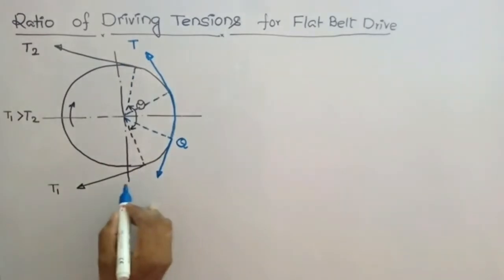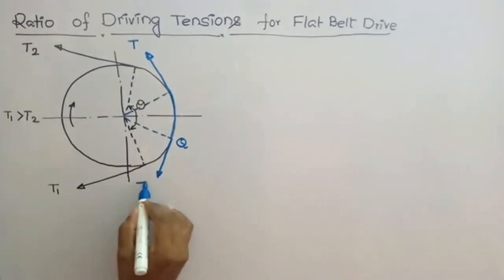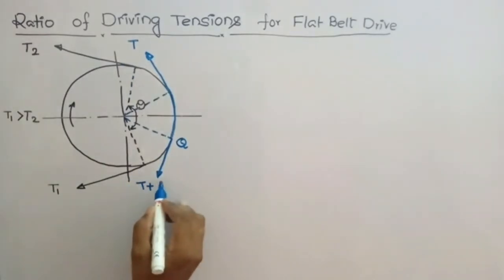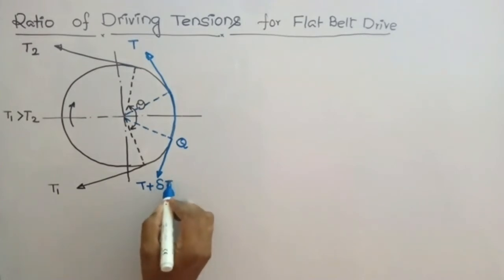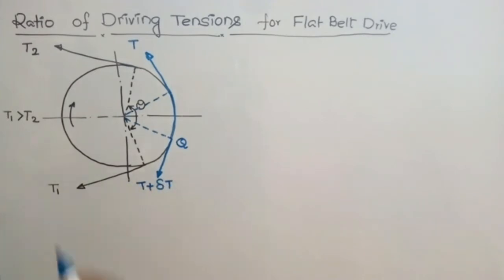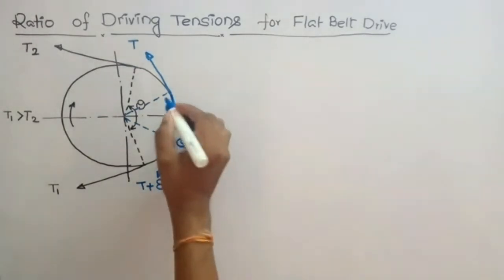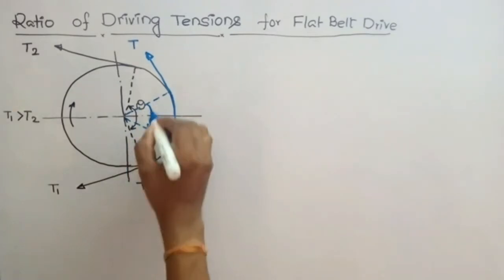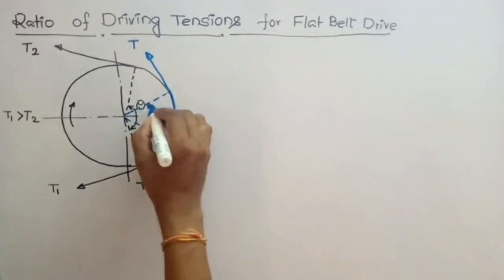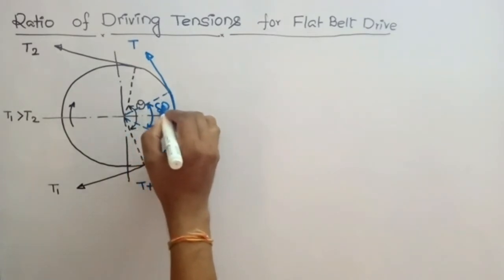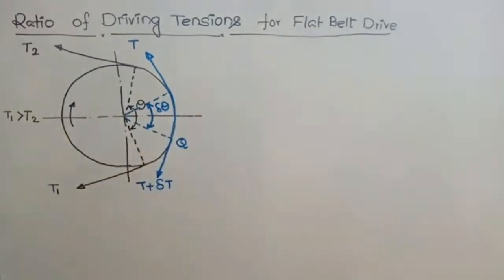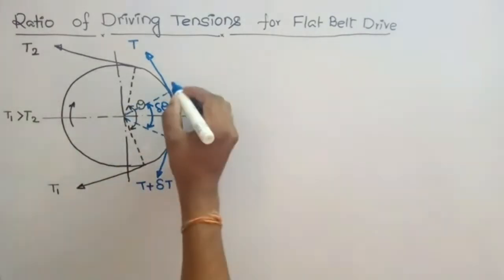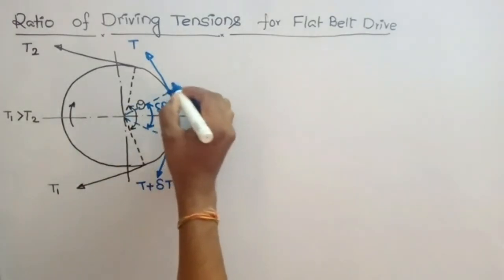Since it is toward the tight side, the tension will be slightly higher on the other end. Let us take T plus delta T. This elemental angle is considered as delta theta.